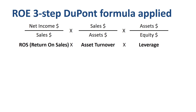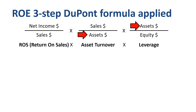As you see, sales is both in the numerator as well as the denominator of the equation, so it would disappear in the multiplication. The same goes for assets, which is also in both the numerator as well as the denominator of the equation. For analytical purposes, having the three sections is very useful, as you will soon see.